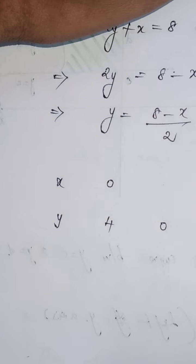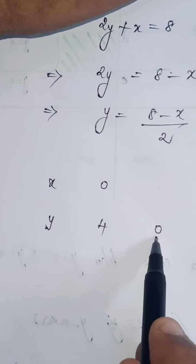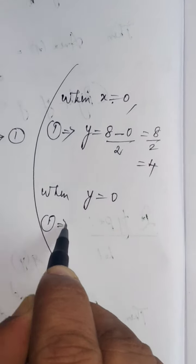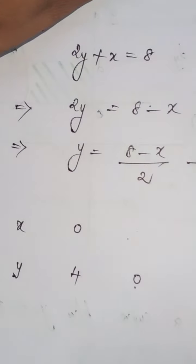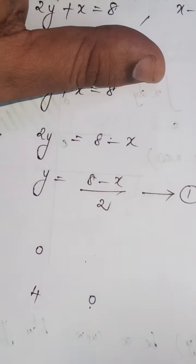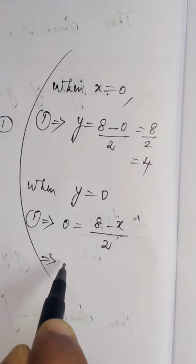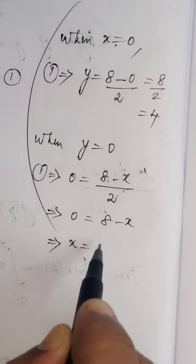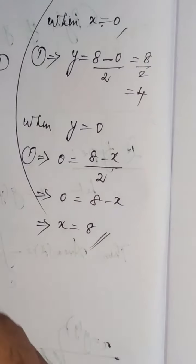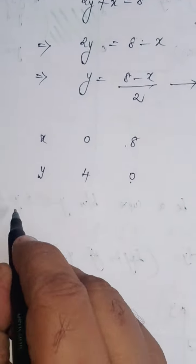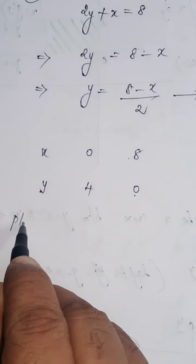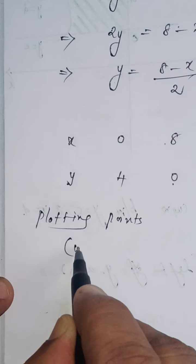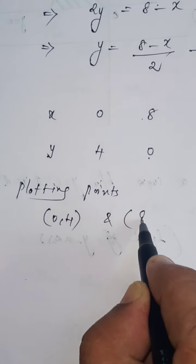Now substitute y equal to zero. Equation one gives 0 equals (8 minus x) divided by 2. Cross-multiplying: 0 equals 8 minus x, which implies x equals 8. So x equals 8. The two points to be plotted are: (0, 4) and (8, 0).